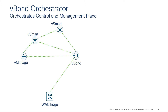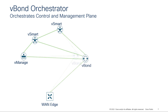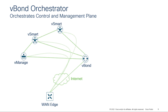V-BON orchestrates the control and management plane for all SD-WAN devices. Once the WAN edge router establishes the control connection to the V-BON, the V-BON will communicate to the WAN edge router the list of V-Smart and V-Manage controllers, and in turn will inform the controllers that the WAN edge is joining the network. The WAN edge initiates DTLS or TLS control connections depending on the configuration, and each controller authenticates and authorizes the edge router before those connections can be accepted. For other transports that are present, edge routers make control connections to one V-BON and multiple V-Smart controllers over them as well.